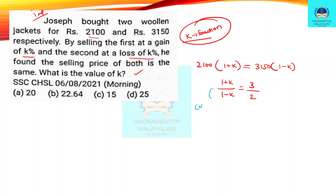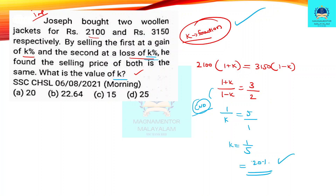We will do the Componendo-Dividendo method. We will increase the numerator and denominator. The number is (a plus b) by (a minus b). Now, on the right side, we will increase the difference. What is the value of K? 1 by 5 is how much percentage? 20%. So K equals 20%. Option A is the answer.